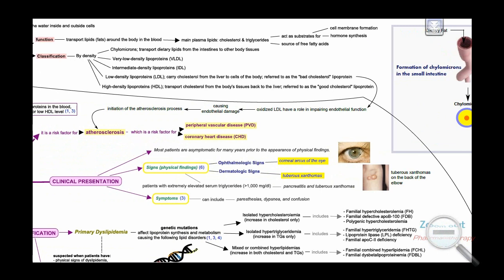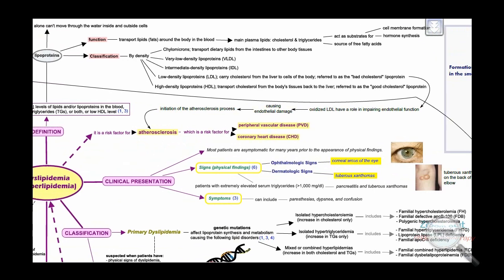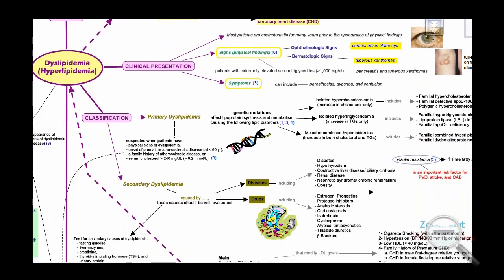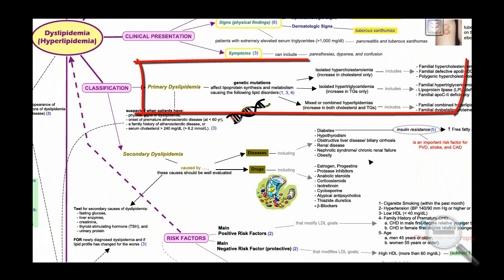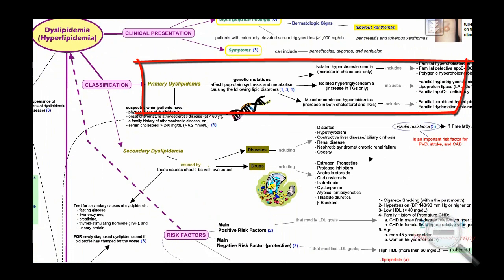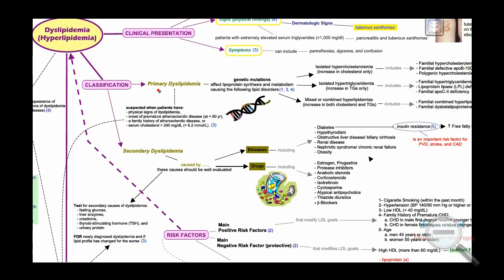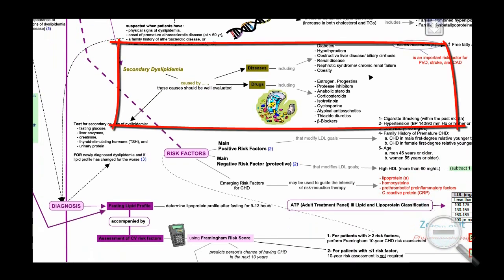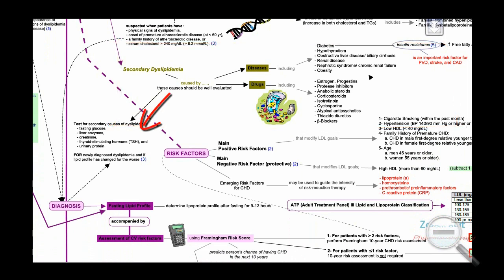Dyslipidemia is classified into primary and secondary dyslipidemia. Primary dyslipidemia occurs due to genetic mutations that affect lipoprotein synthesis and metabolism, causing these lipid disorders. Primary dyslipidemia is suspected in specific cases that should be considered in the diagnosis. On the other hand, secondary dyslipidemia can be caused by certain diseases or drugs, and these causes should be considered in both the diagnosis and management of dyslipidemia.